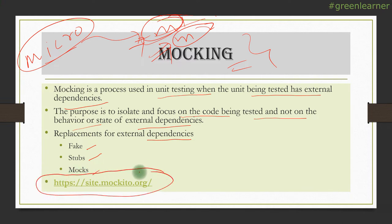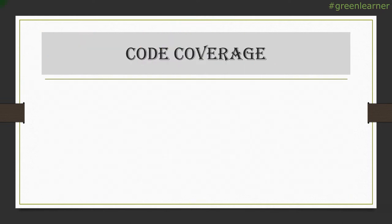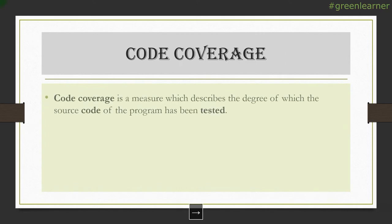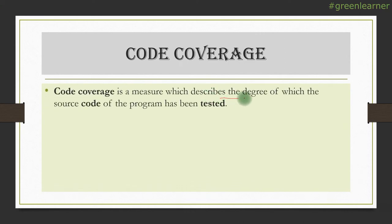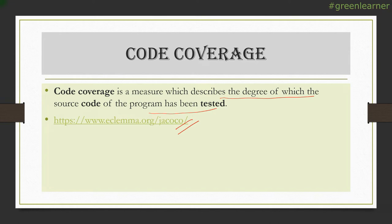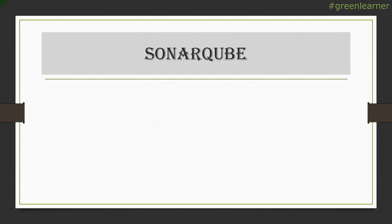With JUnit and Mockito we have done the unit testing. Now it is time to measure the code coverage — how many lines and how many things we have covered in the unit testing. Code coverage is a measure that describes the degree to which the source code of a program has been tested. We are going to use the JaCoCo library with Java to measure the code coverage.